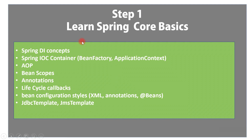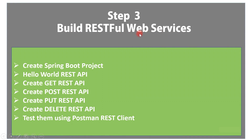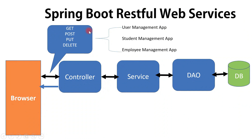Once you understand Spring Core basics and how Spring Boot auto-configuration works, you can start building RESTful web services with Spring Boot. Create a Spring Boot project using Spring Initializer, create a Hello World REST API initially, then gradually create different REST APIs — GET, PUT, POST, DELETE — and test them using Postman or using a RestTemplate class. To get hands-on experience, create a small project with CRUD REST APIs on different entities, for example a user management system or a student management system.